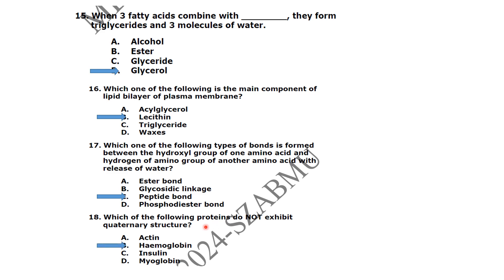Which of the following proteins do not exhibit quaternary structure? Hemoglobin exhibits quaternary structure. Proteins like insulin and collagen also exhibit quaternary structure. The protein that does not exhibit quaternary structure is the correct answer here, and hemoglobin does have quaternary structure — this was an important question that could carry extra marks.